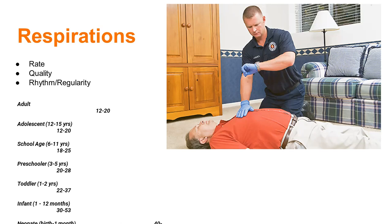Here are the normal respiratory rates by age group: adult 12–20, adolescent 12–20, school-age 18–25, preschooler 20–28, toddler 22–37, infant 30–53, and neonate 40–60 breaths per minute. They're not going to trip you up on the exam with exact numbers — just know them.